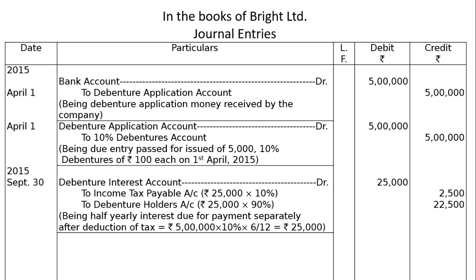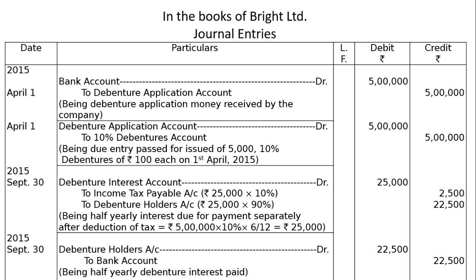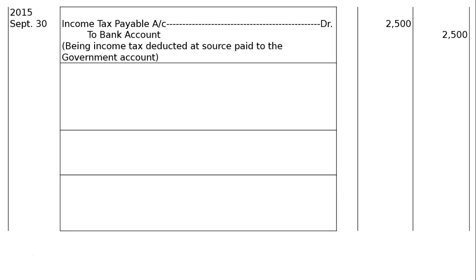Debenture Holders account debited to Bank account (same day) — Rs 22,500. Being half-yearly debenture interest paid — 90% of interest. Then payment to the government for tax: Income Tax Payable account debited Rs 2,500 to Bank account Rs 2,500. Being income tax deducted at source paid to the government.